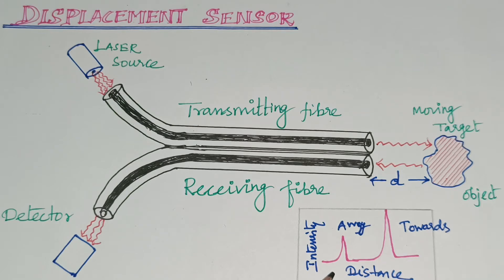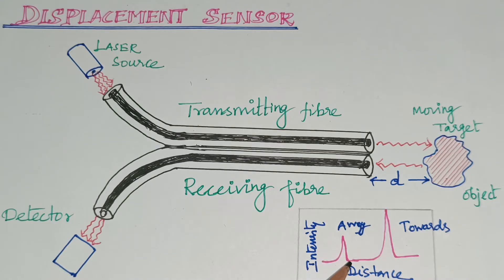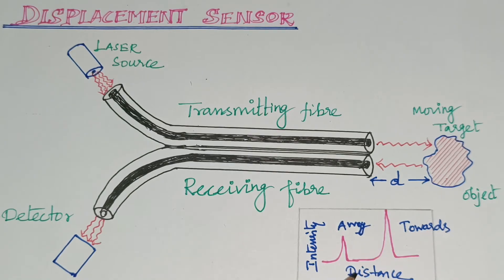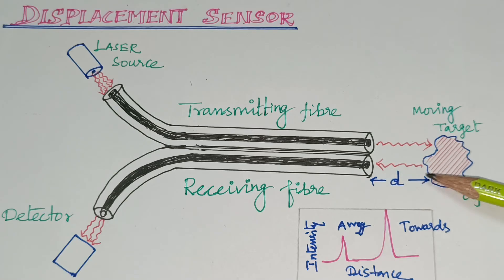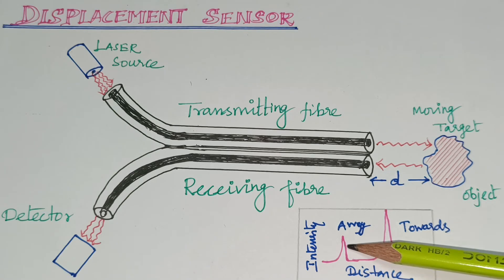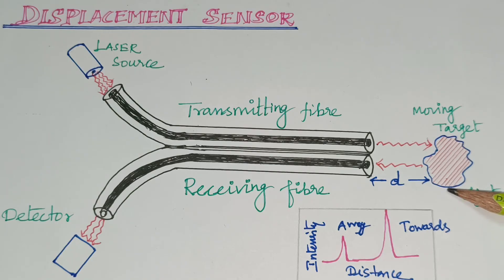If the received intensity is more, then the target is moving towards the Fiber. If the intensity is small, the Moving Object is away from the Fiber. This gives the distance of the Target or Moving Object — we can determine how far the object is from the Fiber. In summary: if the intensity is high, the Moving Target is towards the Fiber; if the intensity is low, the object is away from the Fiber. This is how we find the distance between the Fiber and the Object.